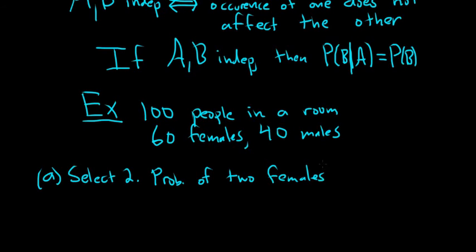We're going to select two and want the probability of two females. The wording here is a bit sloppy. The question should say, if two people will be randomly selected, what is the probability that both of them will be females? Probabilities describe the future, so we always have to think about that future tense.